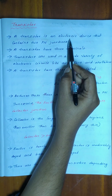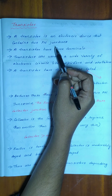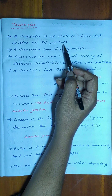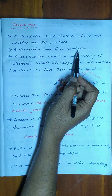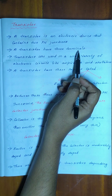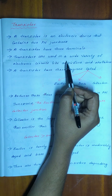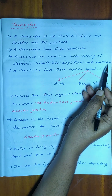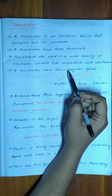A transistor is an electronic device with two PN junctions. We have already discussed the PN junction in the previous video. The transistor is used in a wide variety of electronic circuits, like amplifiers and oscillators.